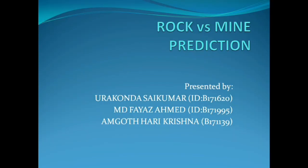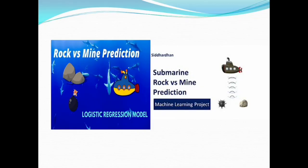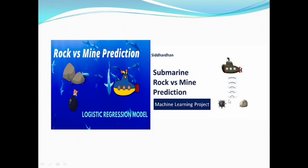Before going directly to the coding part, first we will see how this ML algorithm is working — what type of classifier we are using. You know a submarine threat. In front of a submarine there is a rock and a mine. By using the sonar detection system, it can predict whether it is a mine or a rock using available data. This is how the prediction will be done.